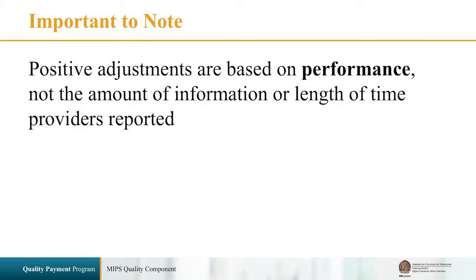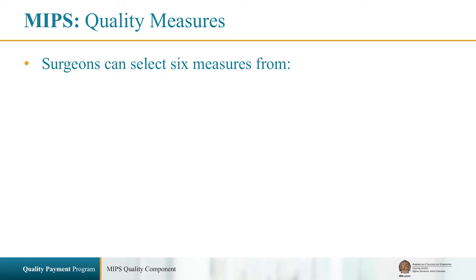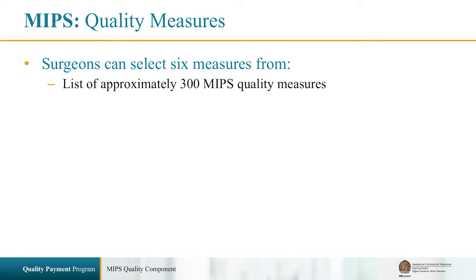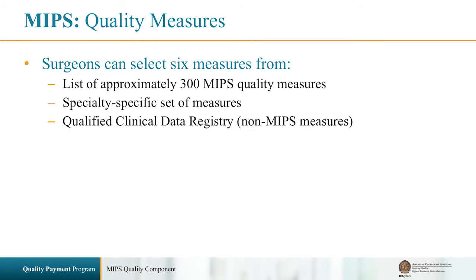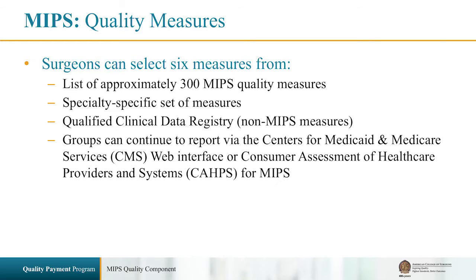Although the quality component of MIPS is very similar to the old PQRS program, a key difference is that your score will be determined by your performance on measures, not just the act of reporting. Surgeons can choose six measures from the full list of roughly 300 MIPS measures, or they can report six measures via a specialty-specific measure set. They can also identify an appropriate QCDR and report non-MIPS measures. For groups, the web interface and the CAPS for MIPS remain options.